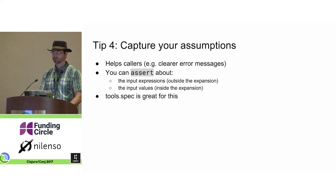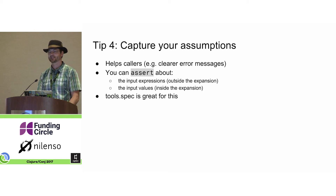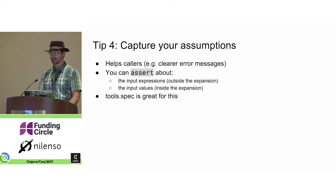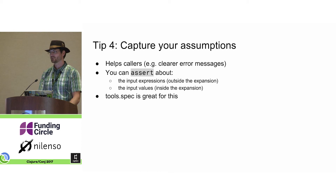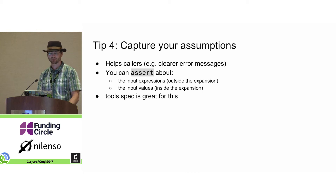Tip four: capture your assumptions. This really helps callers if they violate an assumption to get a clear error message. Note that you can assert about the input expressions, which means you'd have your assert outside of the returned expansion, or you can assert about the values after they've been evaluated, in which case the assert statement would be inside the expansion. Also, clojure.spec is great for this — good tool.